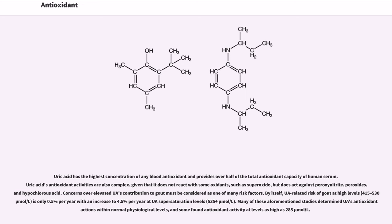Concerns over elevated UA's contribution to gout must be considered as one of many risk factors. By itself, UA-related risk of gout at high levels (415 to 530 micromoles/L) is only 0.5% per year with an increase to 4.5% per year at UA supersaturation levels (535+ micromoles/L). Many of these studies determine UA's antioxidant actions within normal physiological levels, and some found antioxidant activity at levels as high as 285 micromoles/L.